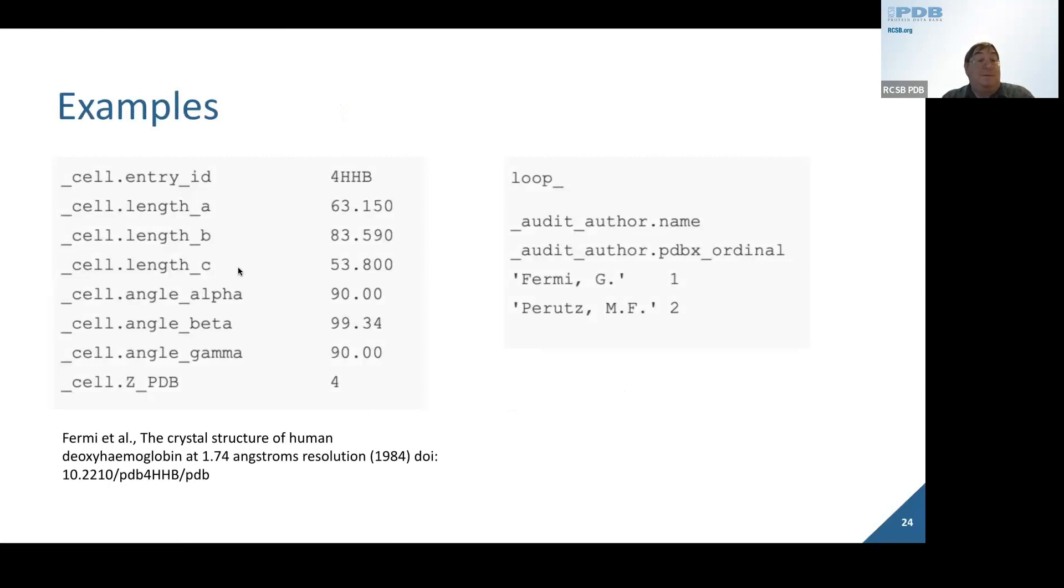Here are some examples. We are showing the structure of deoxyhemoglobin for the HHB entry. Here's what the unit cell is reported as—a table of cell and various attribute names. The length of the A-axis, B-axis, C-axis, the angles associated with it. We also have another syntax, which is what we call loop syntax, where you enumerate what the actual items are. So we have a name and an ordinal, then you have a list of data values. This is a tabular type of format. Both are equally valid.